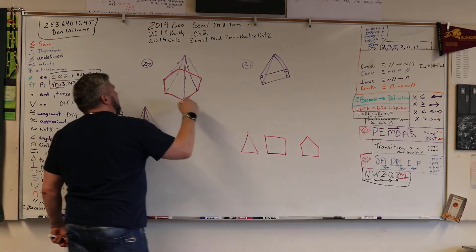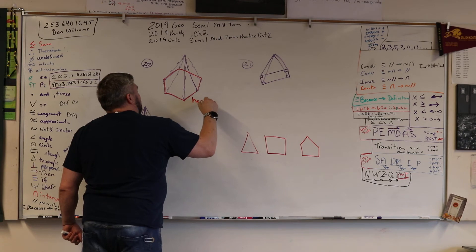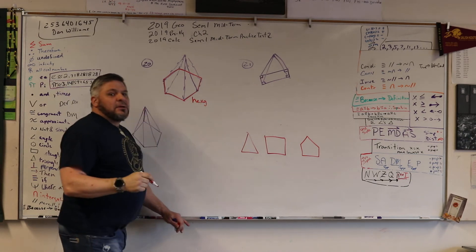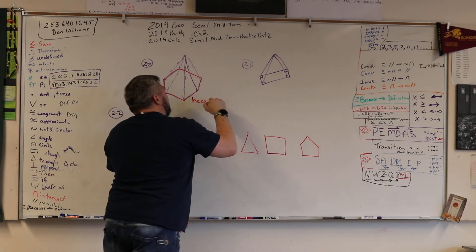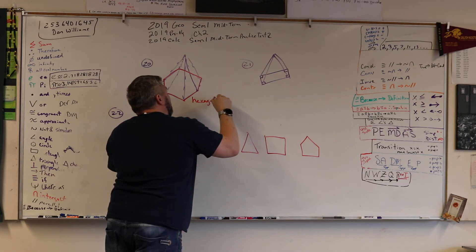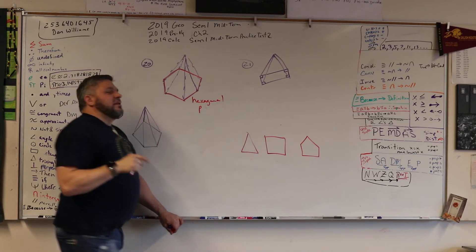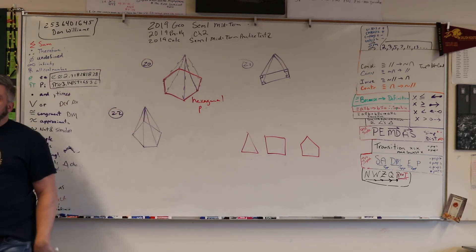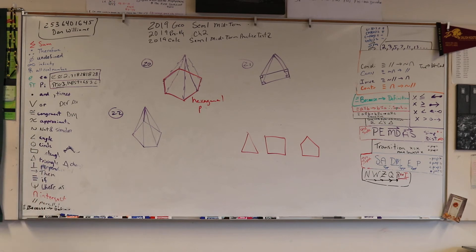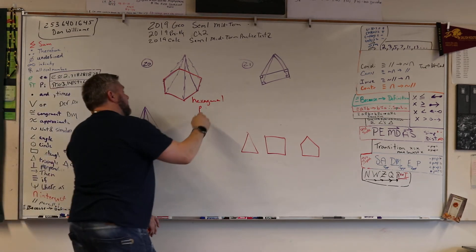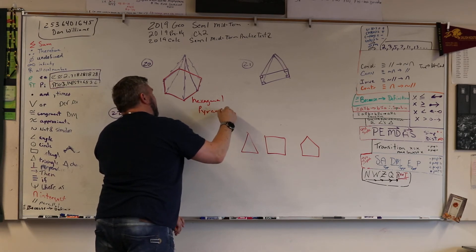Good job. So this is what? Hexagon. Hexagonal what? Hexagonal prism. Well, in this case, it's not a prism because it comes to a point, right? And if it comes to a point, then we call it a what? Pyramid. There you go.